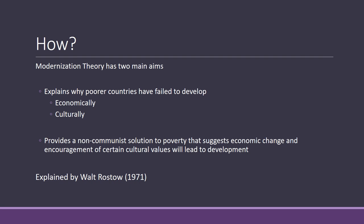So what is modernization theory? It had two main aims: it wanted to help poorer countries to develop, but it also explained why poorer countries fail to develop both economically and culturally. The main idea behind Rostow's model — and bear in mind Rostow worked for the US State Department at the height of the Cold War — was to provide a non-communist solution to poverty, suggesting economic change and the encouragement of certain cultural values would lead to development. Rostow was essentially an agent of the US state; there was no neutrality and his work is very much value-laden.